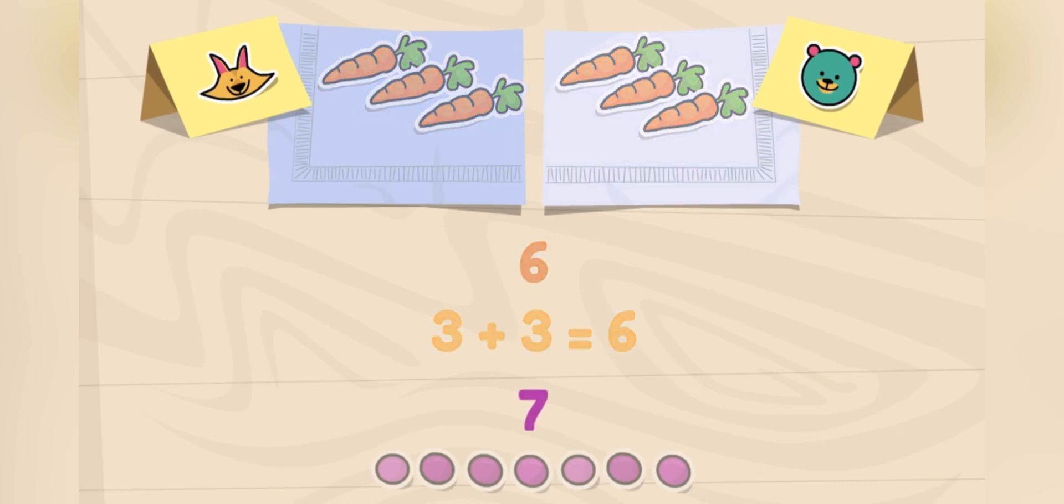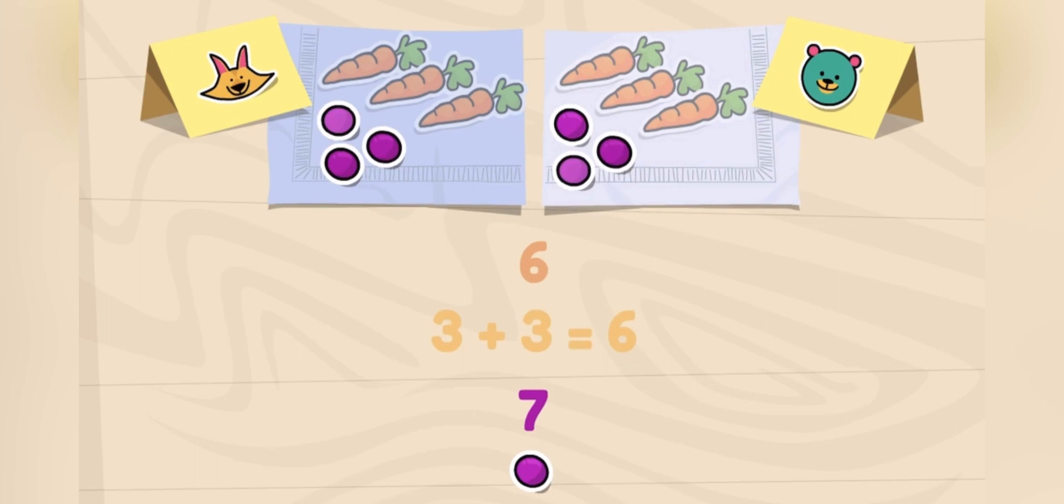Let's check the number seven with grapes. One to Sandy, one to Cody, one to Sandy, one to Cody, one to Sandy, one to Cody, and one left over.